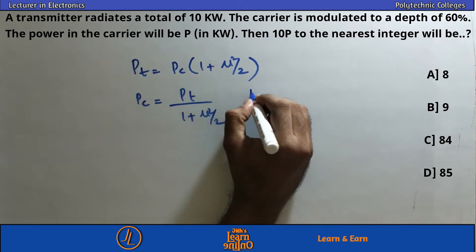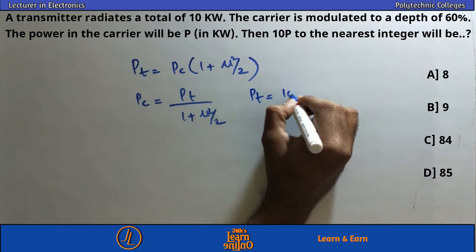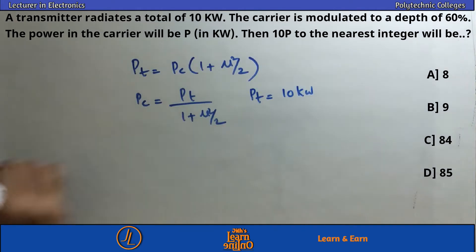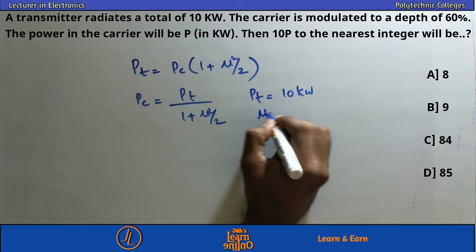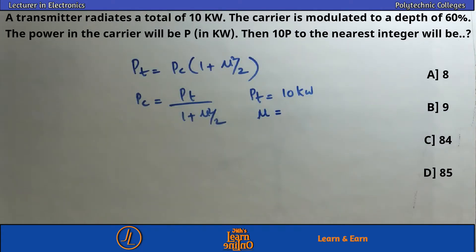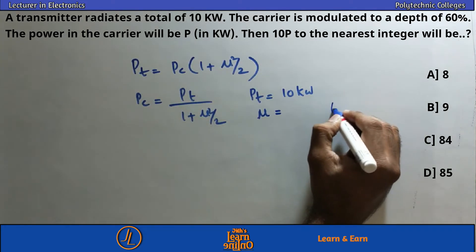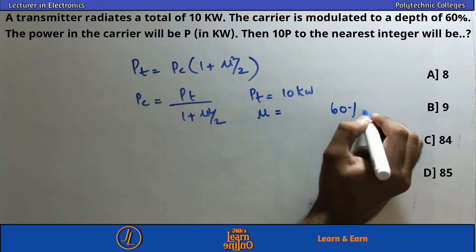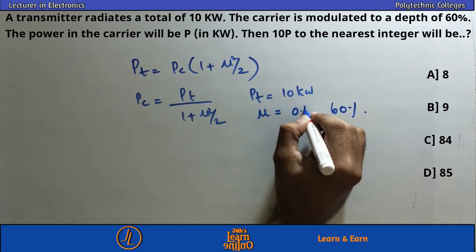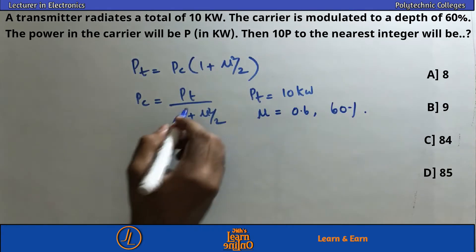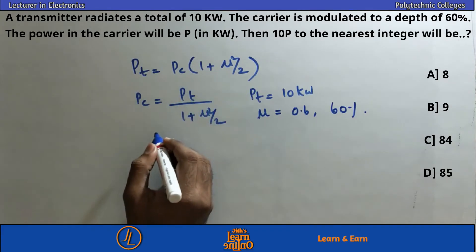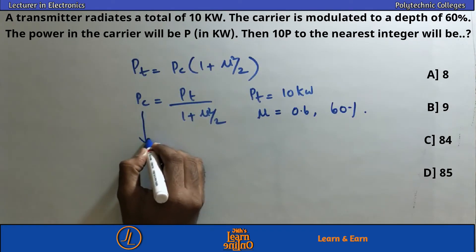So carrier power = total power / (1 + μ²/2). The transmitted power is 10 kilowatts, the modulation depth is 60%, so the modulation index μ = 0.6. Total power = 10 kW and carrier power = P.